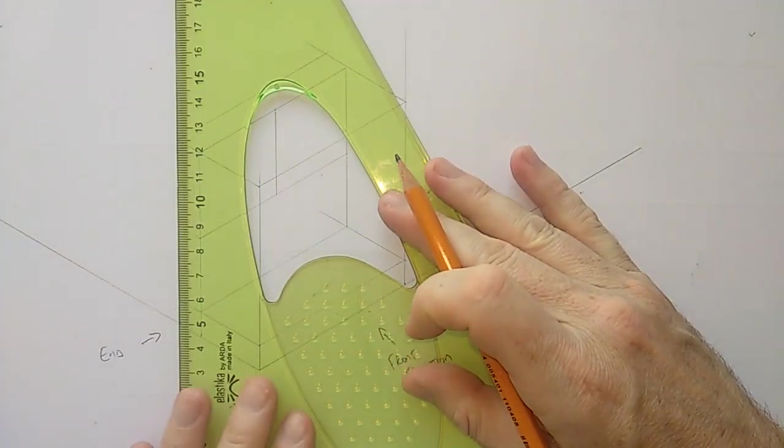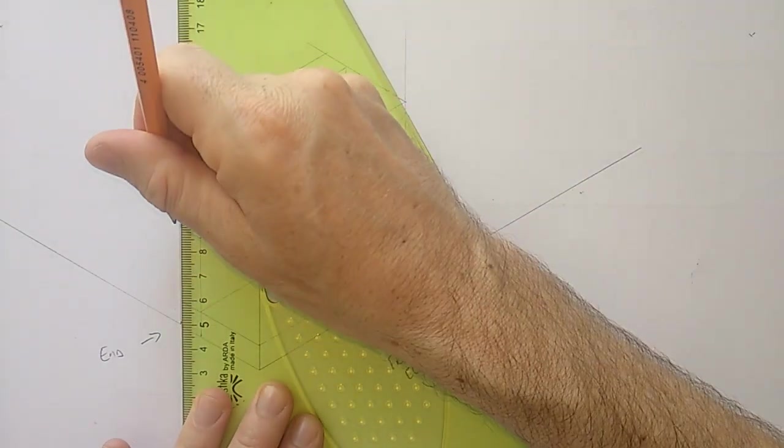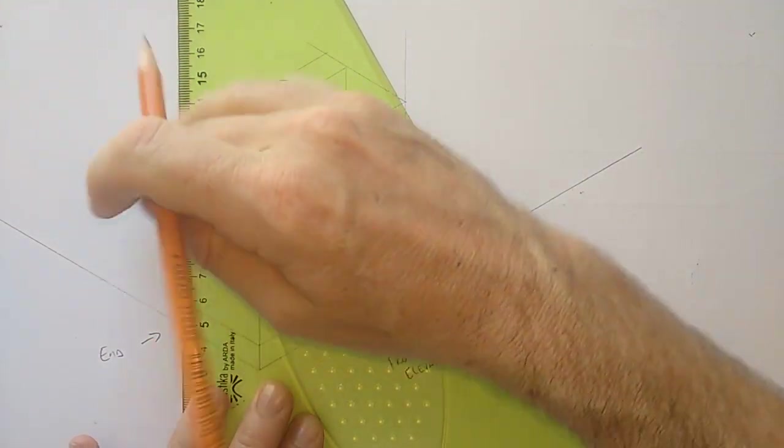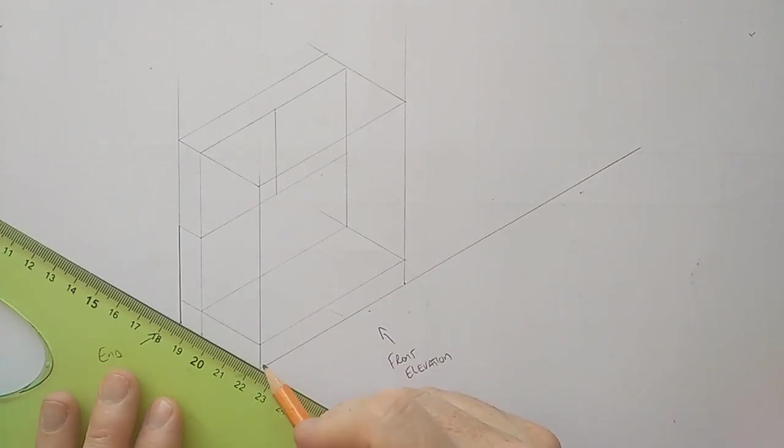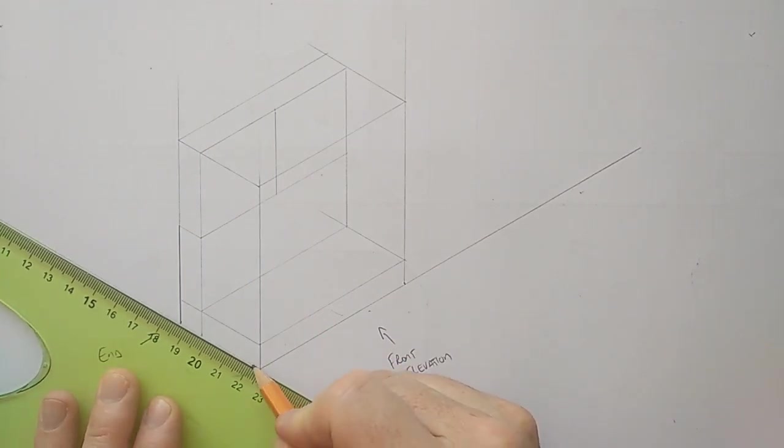So you can do this in whatever order you like, but this is just to help you see what we're looking at. Because if you're a bit confused at this stage, this will make it a bit easier. So the bottom goes all the way across here.